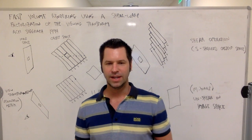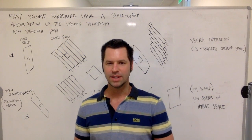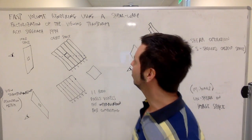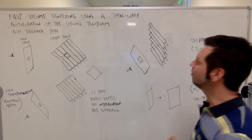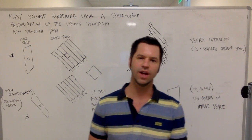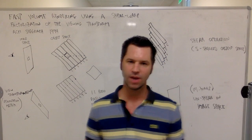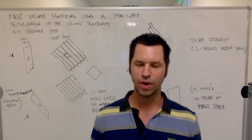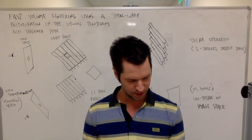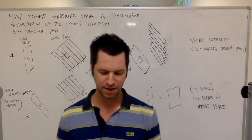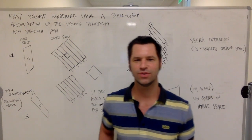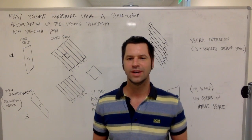Today is going to be an attempt to summarize a fancy algorithm called Fast Volume Rendering Using a Shear Warp Factorization of the Viewing Transform, or the Shear Warp Factorization Algorithm. It's going to be a quick and convenient summary. This video is dedicated to Al Mahasnot — congratulations Al, to be the first student to get two videos.